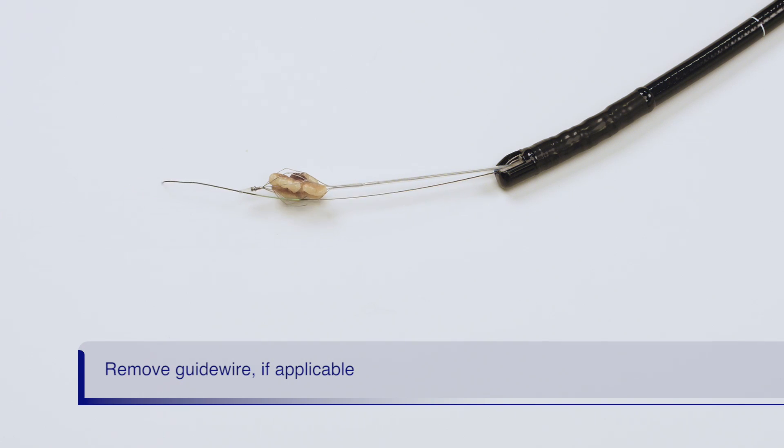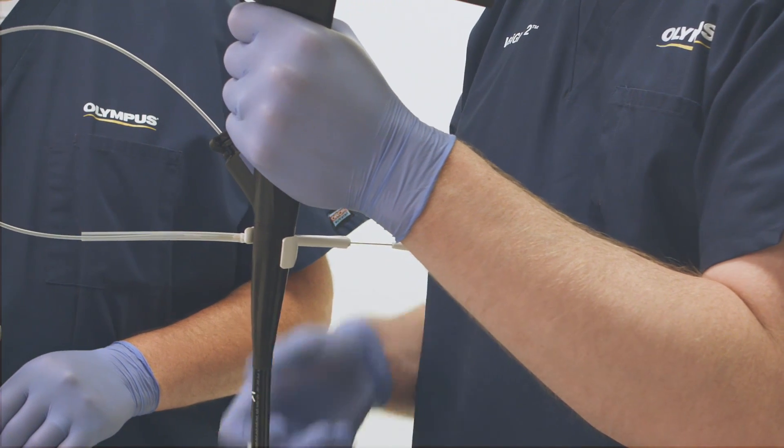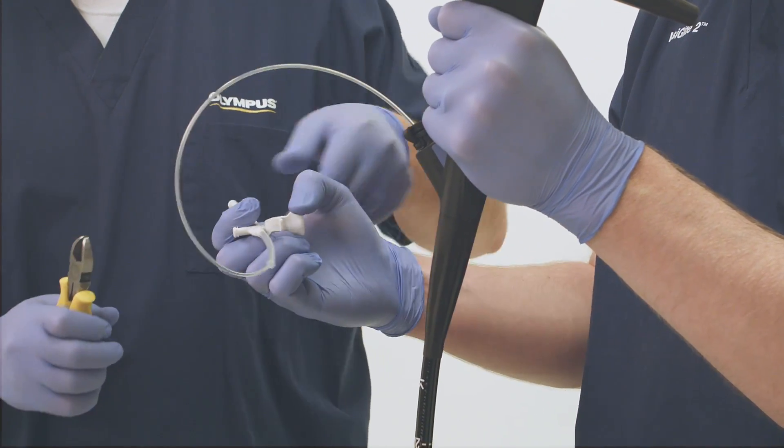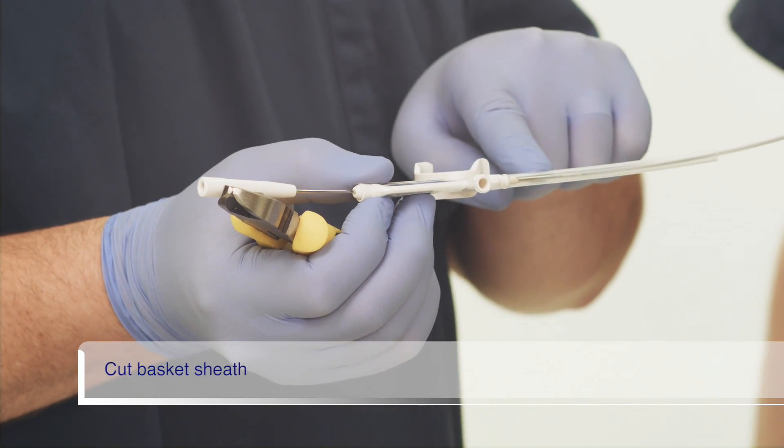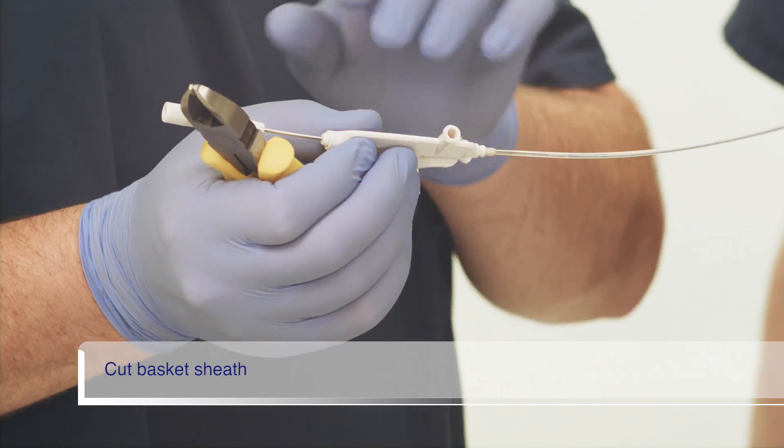If using a wire guided basket, remove the guide wire from the patient and scope. Separate the basket handle from the boot of the scope to facilitate removing the basket sheath and scope from the patient. To accomplish this, slide the plastic sleeve located at the handle away from the handle.